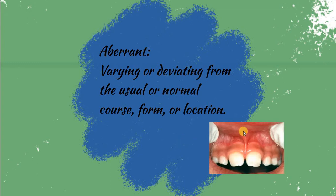For example, we have deviation of location in the case of high frenal attachment. This position should be on the mucosa, but now it is on the papilla — so this deviation is aberrant. We name this condition aberrant frenum.